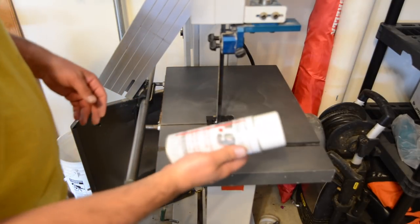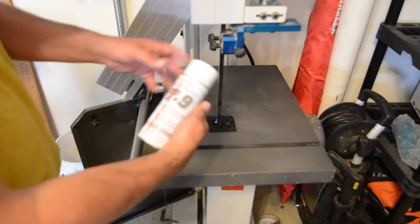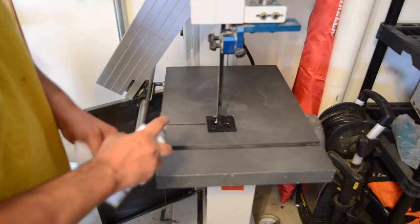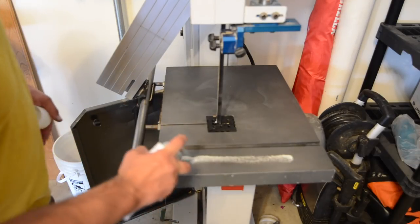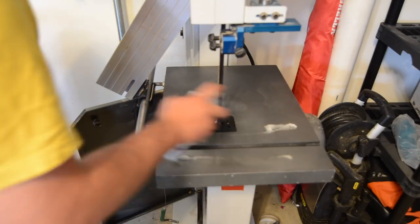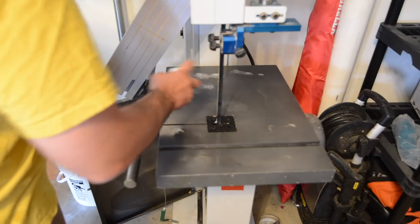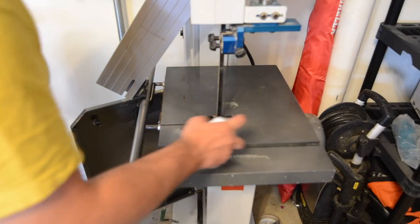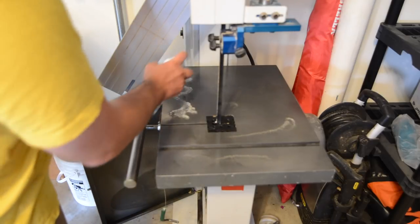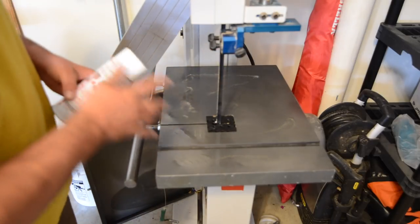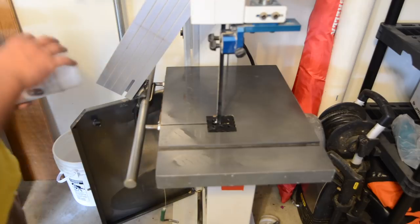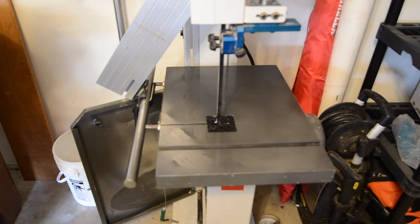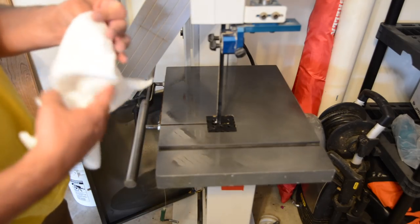Alright, so next up we're going to apply the T9 waterproof lubrication. I'll shake this up, spray it on, let it sit for a minute. We'll get a clean paper towel and we'll wipe it in. It's nice waterproof lubrication.